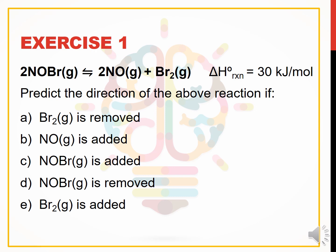For Exercise 1, you are given: 2NOBr(g) ⇌ 2NO(g) + Br₂(g). Predict the direction of the equilibrium shift. If we remove bromine, the system will produce more bromine, so it will shift to the right, because bromine is in the product position.